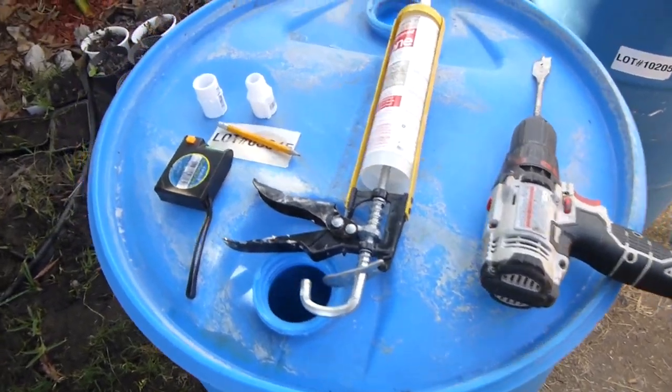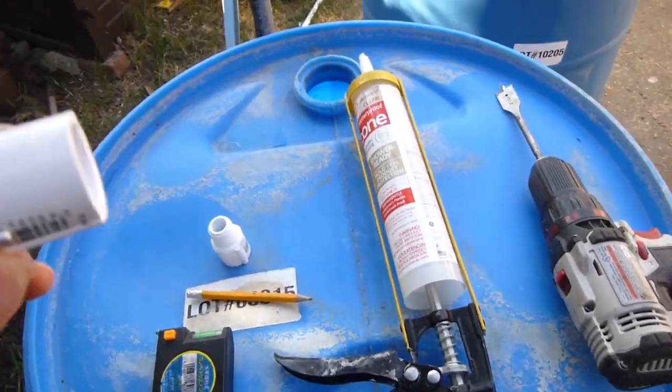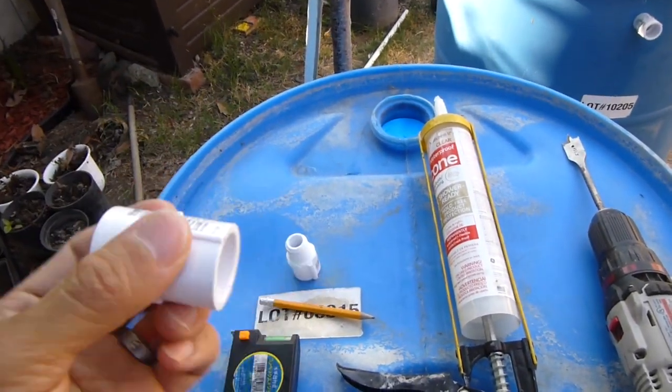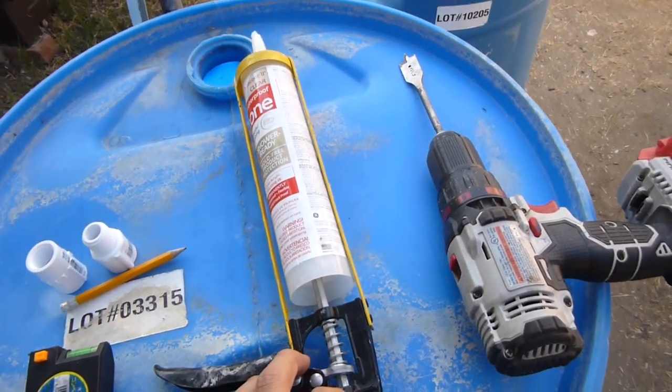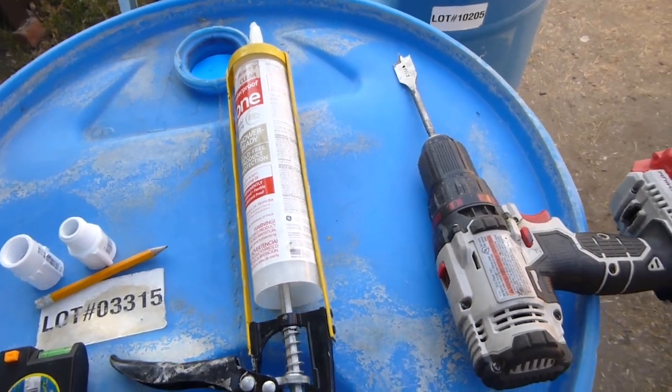These are the tools you will need. I have half inch PVC, one male threaded, one female threaded, and a little bit of silicone gel to seal it up.